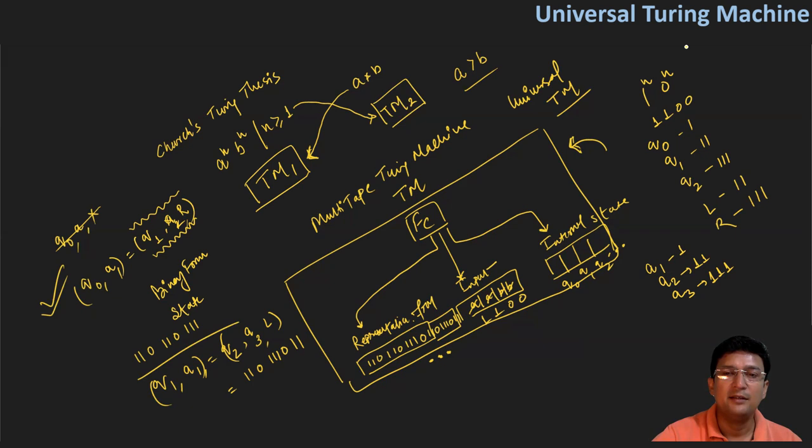So now your Turing machine will behave like the digital computer, and this is what we call the universal Turing machine. Thanks for watching this video, we will meet again with the next concept. Thank you.